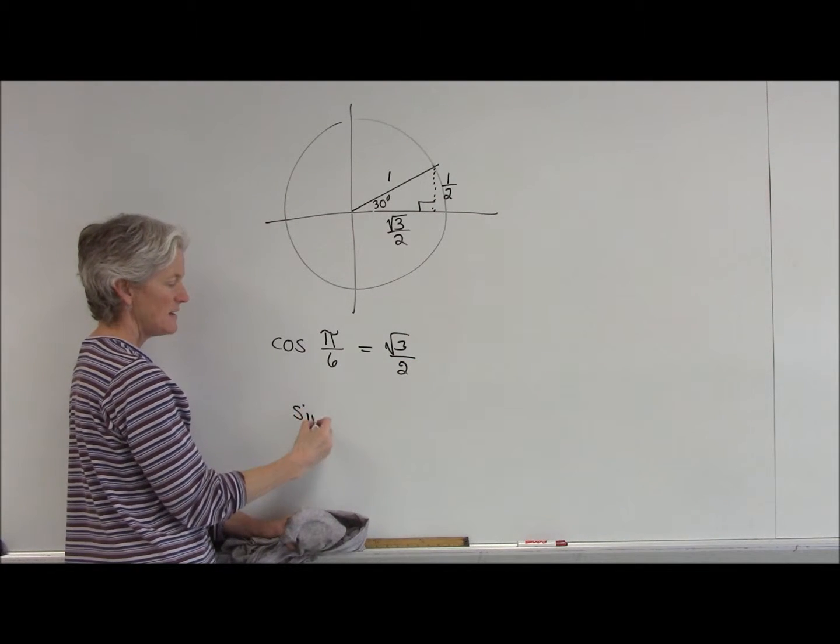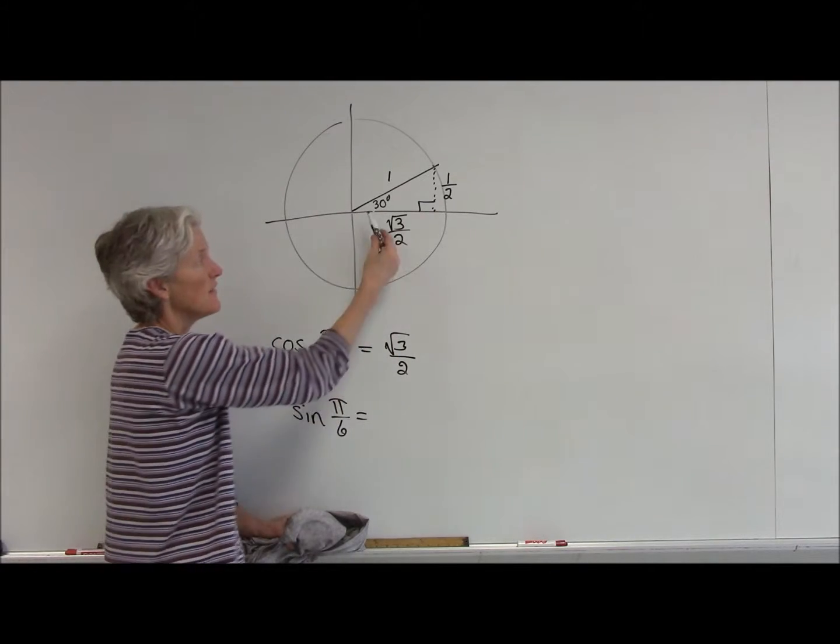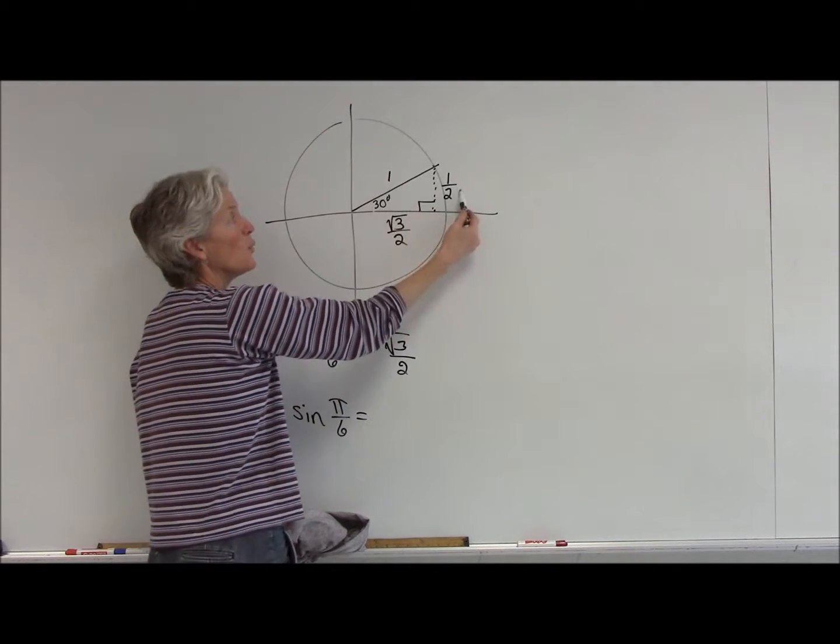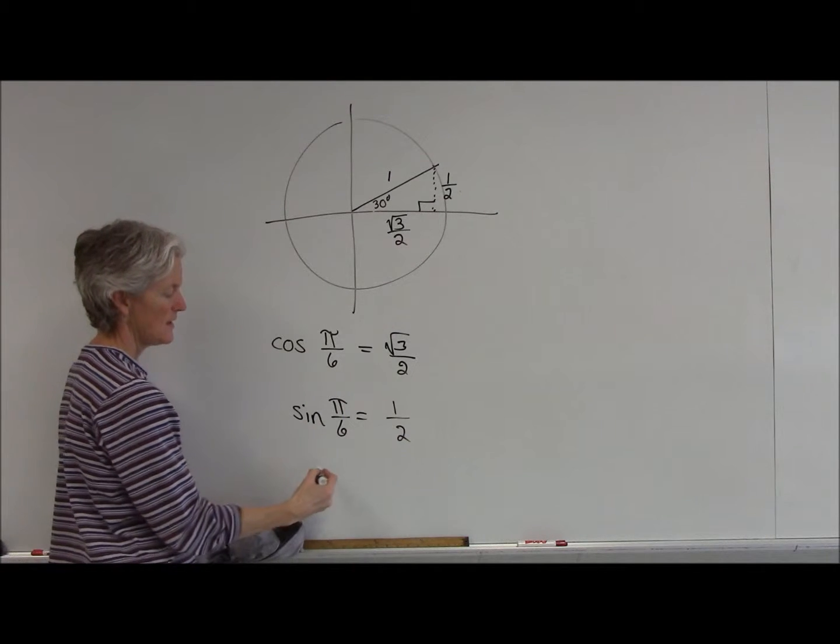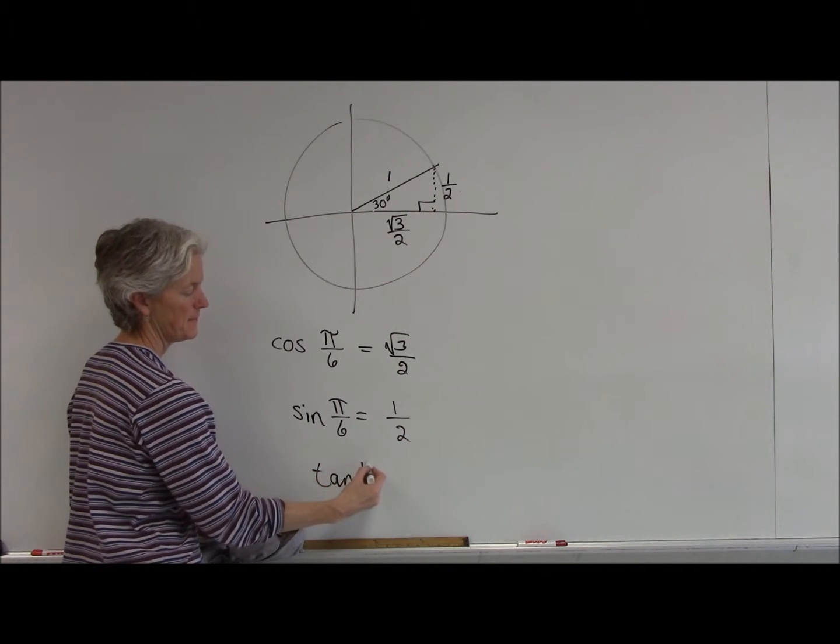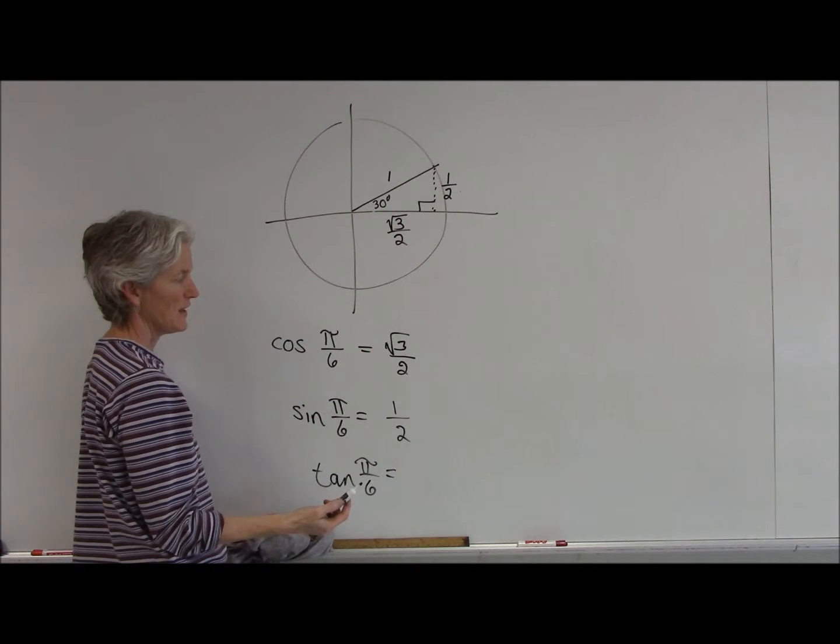The sine of pi over 6, ratio of the sides of the opposite over the hypotenuse, the y value over my hypotenuse.